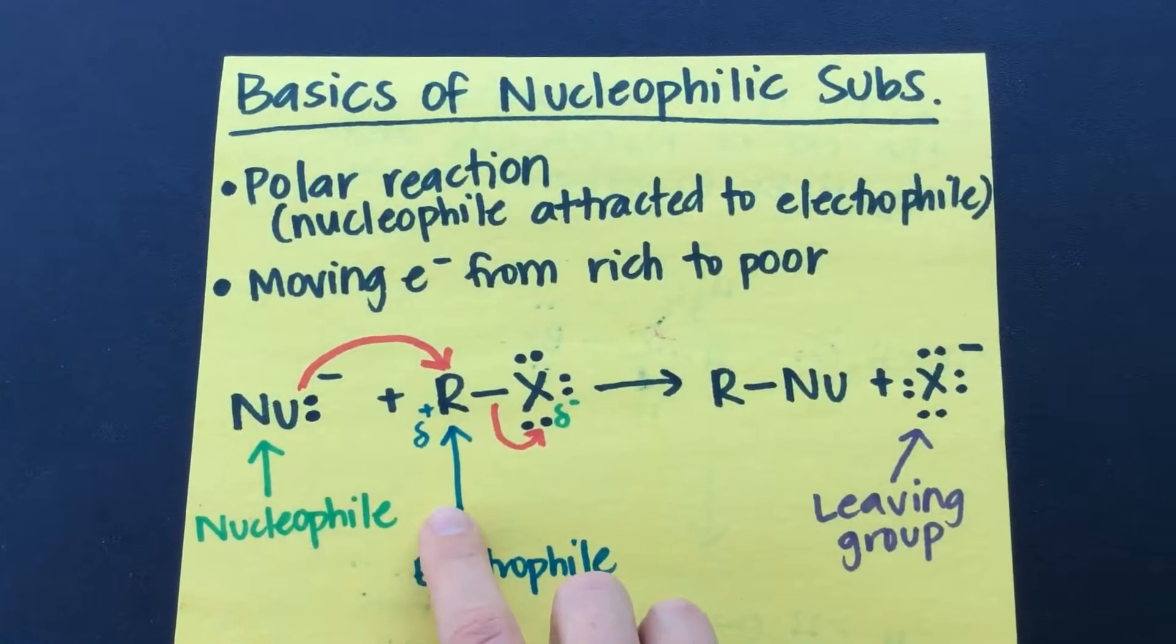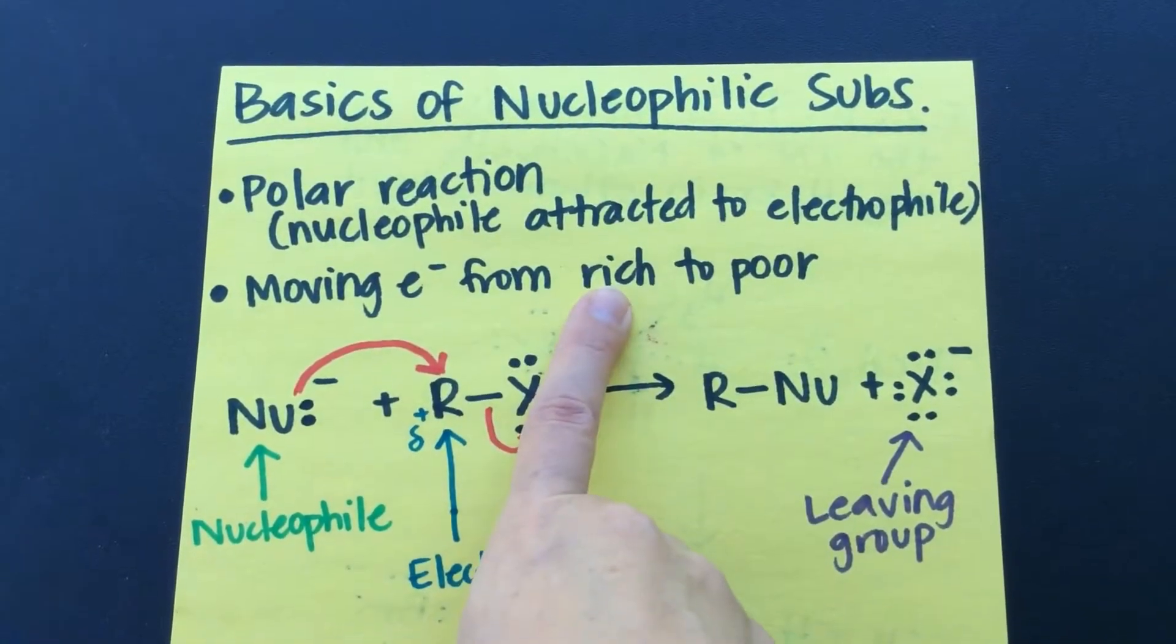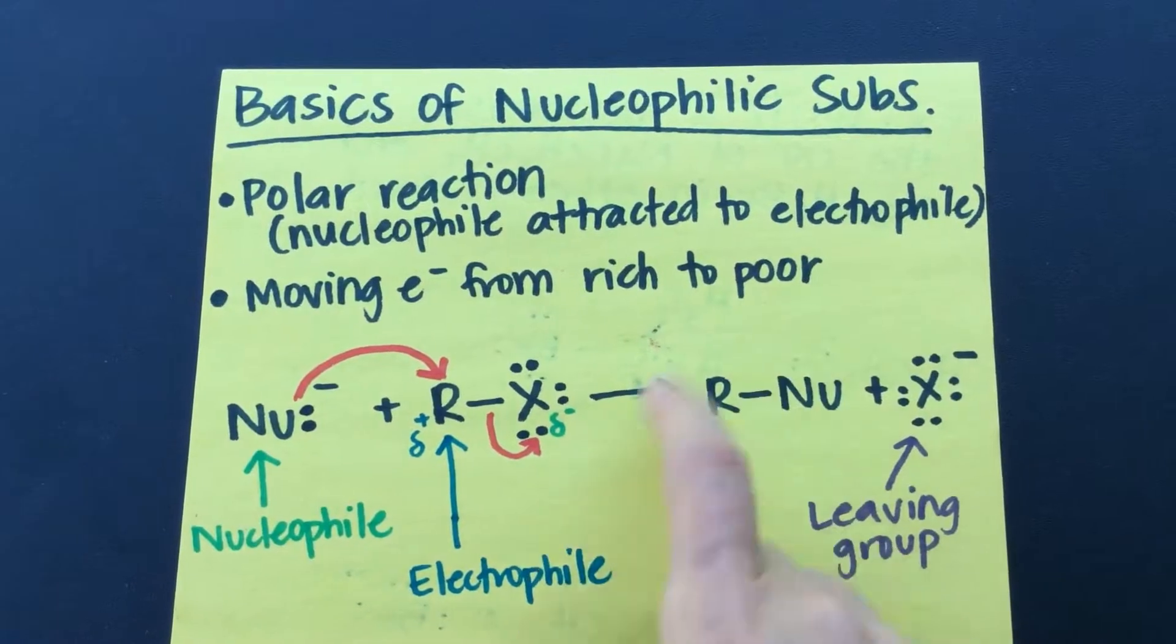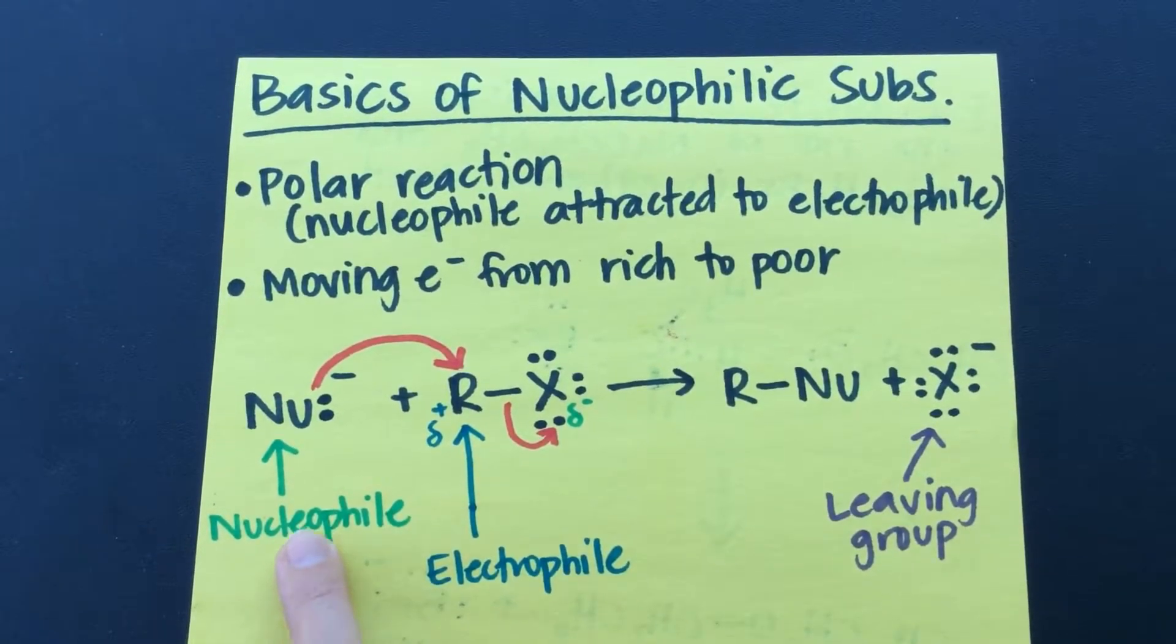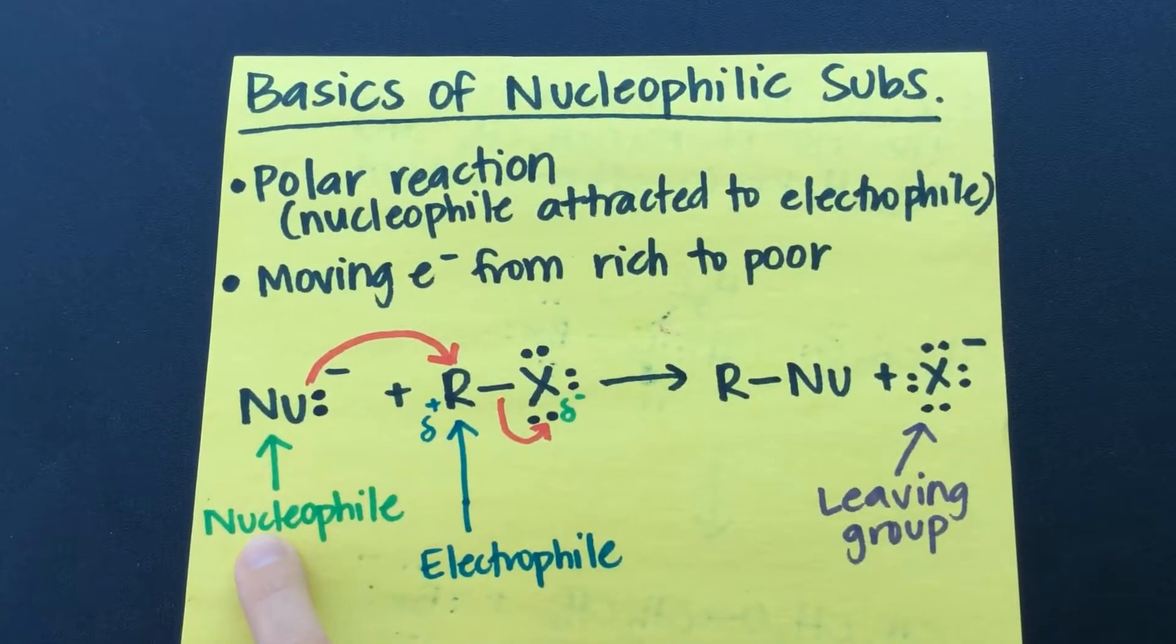And then you can think of these mechanisms that we're going to write as transferring electrons from areas that are rich to electron poor. So our nucleophile is electron rich, right? It's got a lone pair of electrons here, nucleophile.